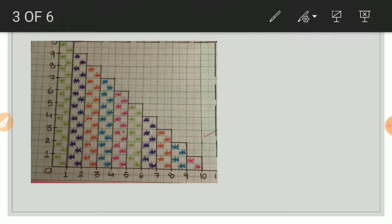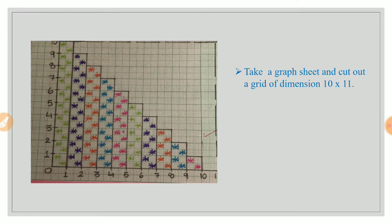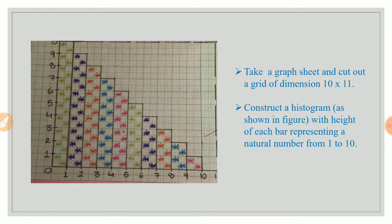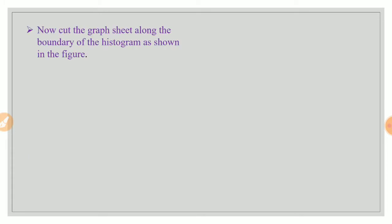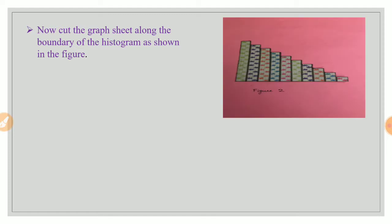Now see what we are supposed to do. I have taken the graph sheet and cut out a grid of dimension 10 by 11 and constructed the histograms of height 1 to 10. Now I cut the graph sheet along the boundary of the histogram as shown in the figure. Now whatever portion is left, I take that portion and I try to put it over this. Let us see what happens.